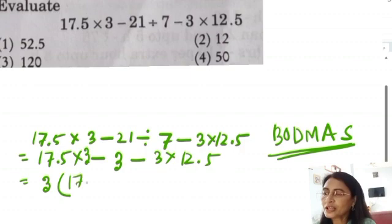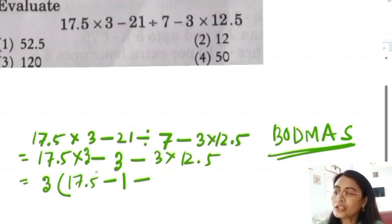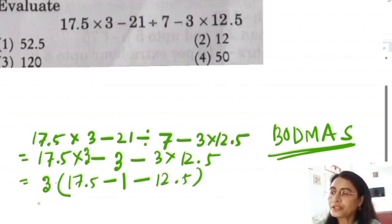So we can take 3 as a common factor. 3 into 17.5 minus 1 minus 12.5. That means 3 into something. We have to take a bracket and write. If we have to take a bracket, let us take a bracket.